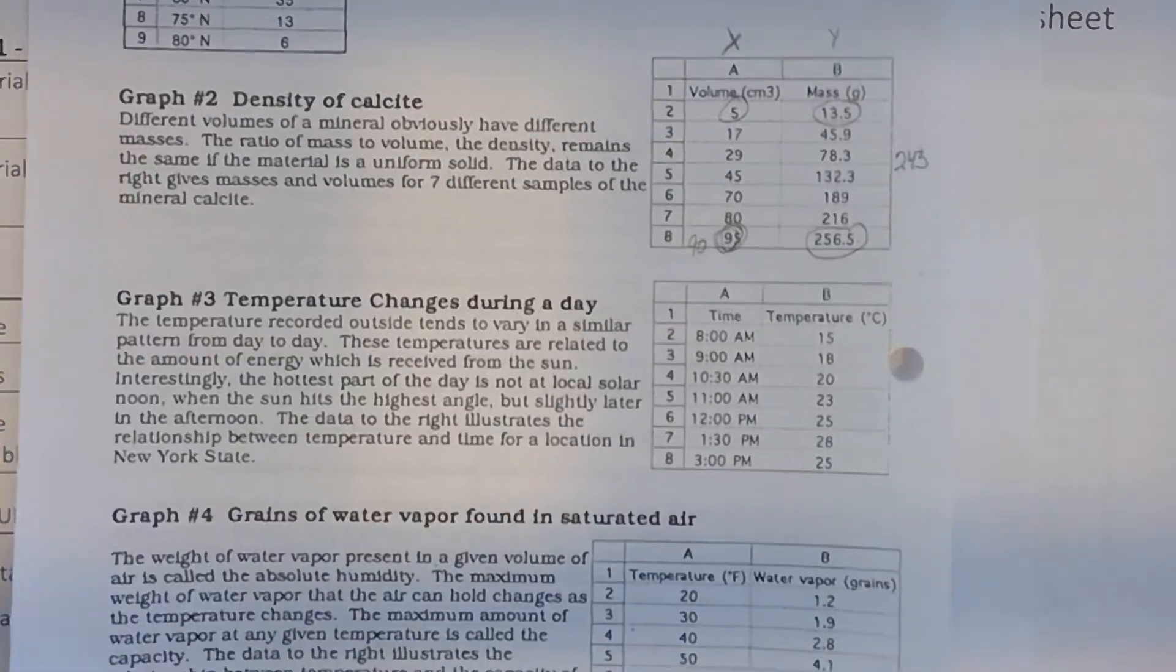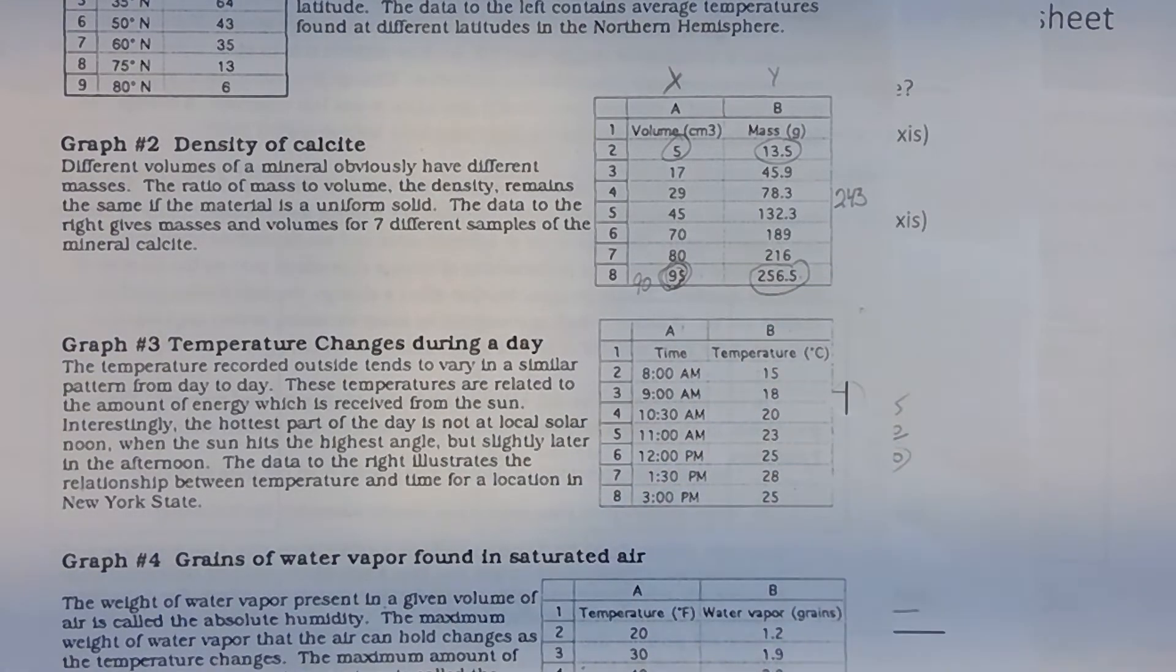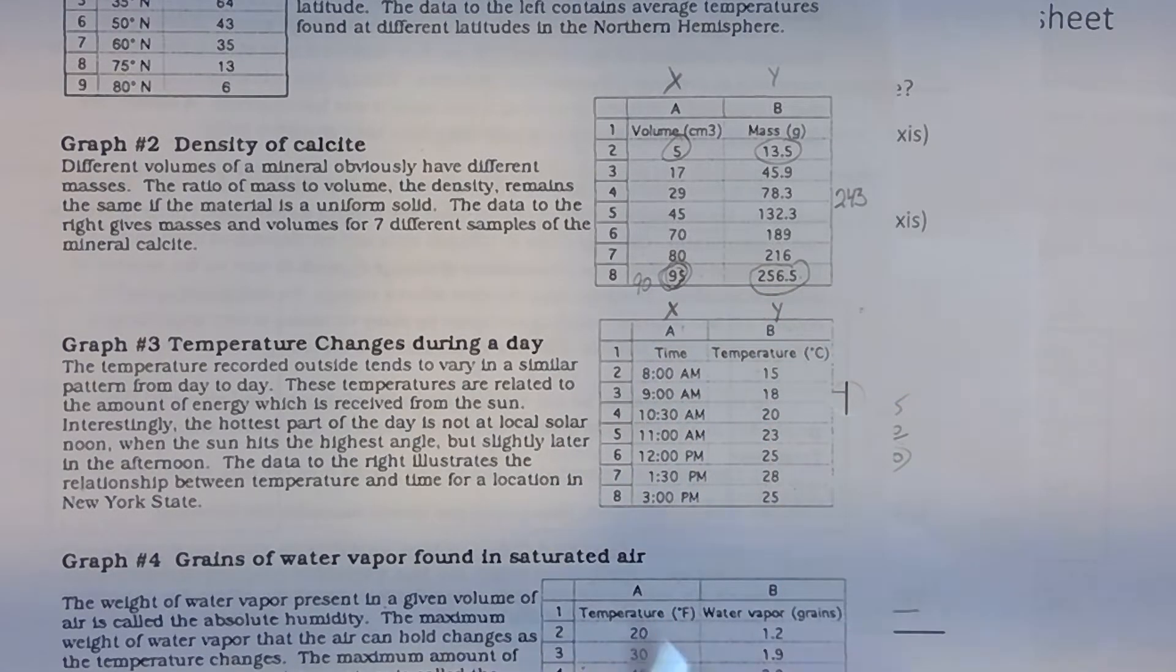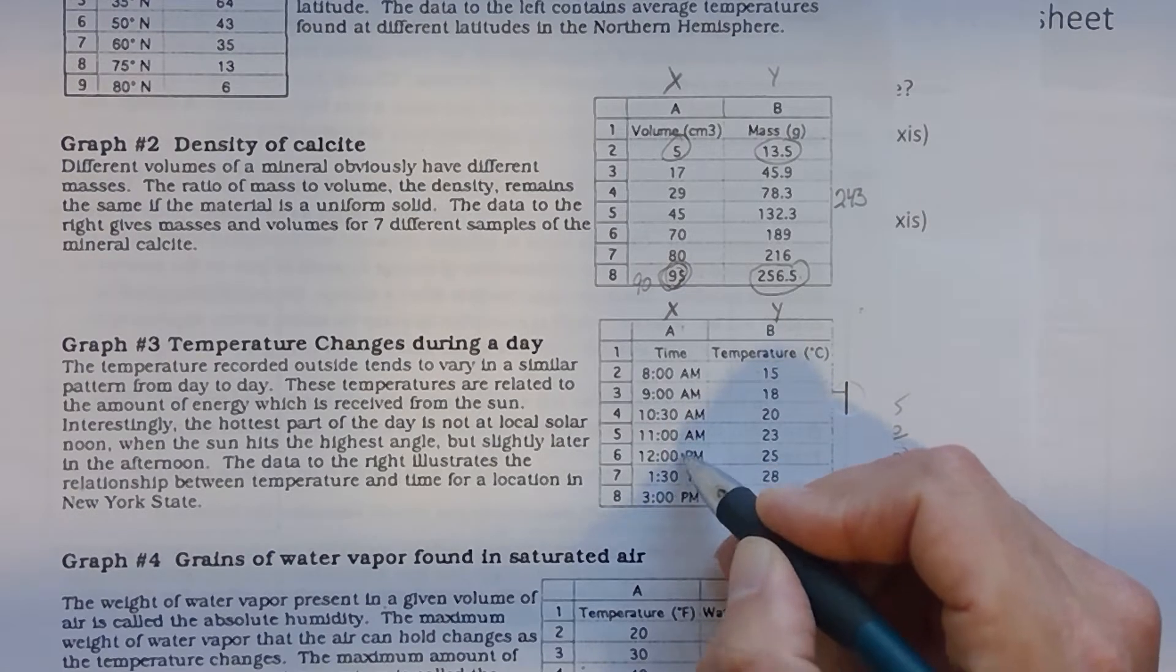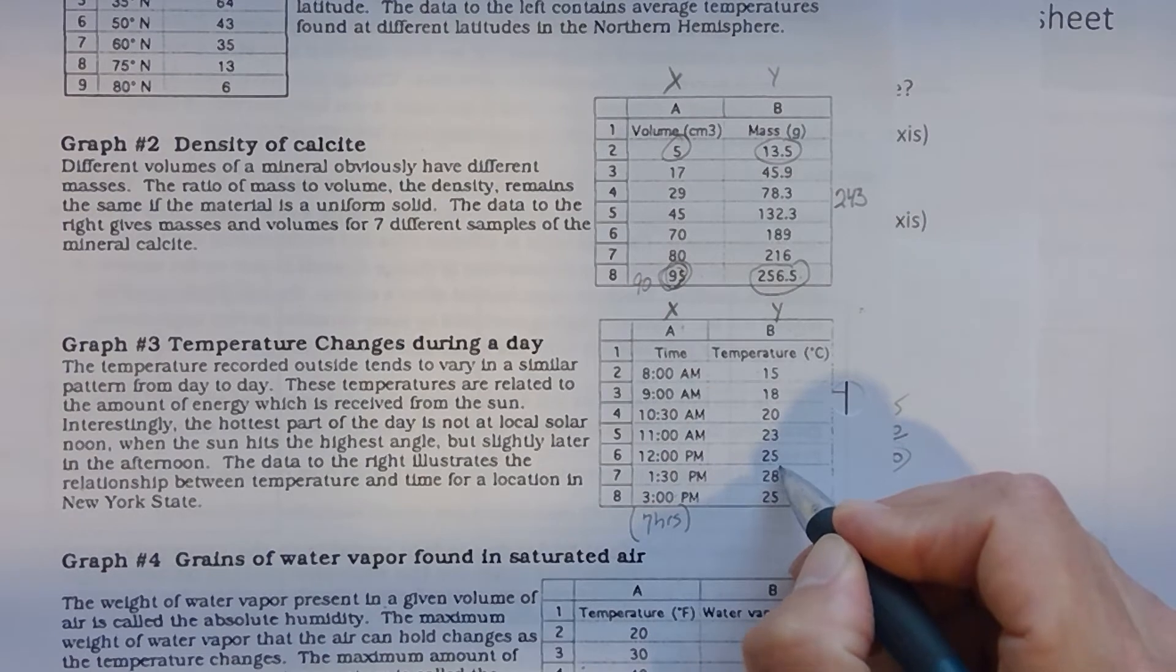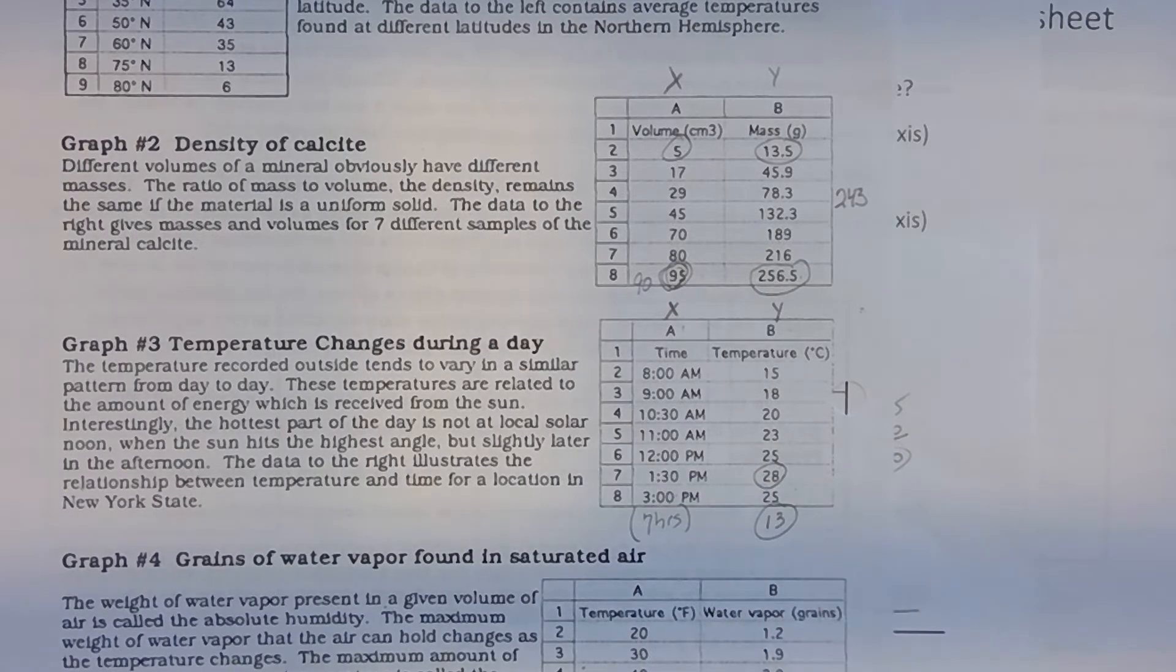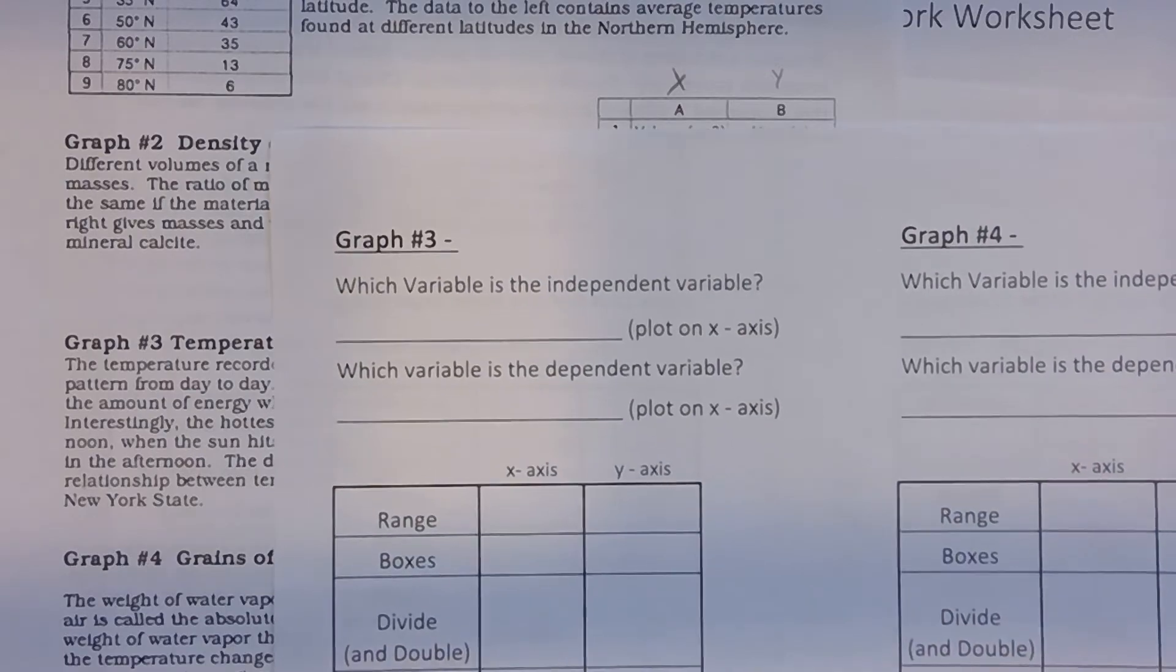All right. Graph number 3 is a little different. For graph number 3, looking at this data table, they're giving you the time of day versus the temperature in degrees Celsius. Once again, the time determines the temperature. So time is the independent. It goes on the X. Temperature is dependent. From 8 a.m. to noon, it's going to be 4 hours. From noon to 3 is an additional 3 hours. So we're covering 7 hours of time. If I'm looking at the range over here, the maximum, the highest temperature, is usually not noon. Here it's at 1:30. So 28 to 15, when I subtract them, the range there is going to be 13.